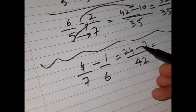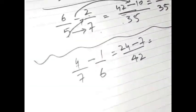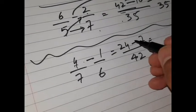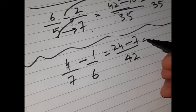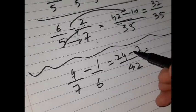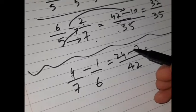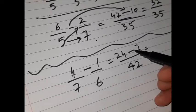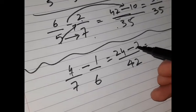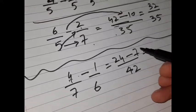So 24 minus 7 is what? First of all, remember that when you are subtracting you should be very clear about your numbers. So 24 minus 7, what I'm going to do is I will say 24 minus 4, this makes 20, and then from 20 I will further minus 3.